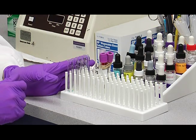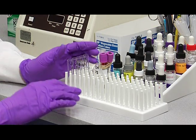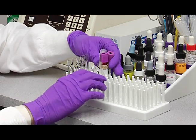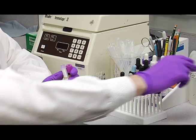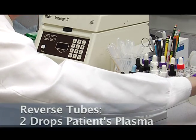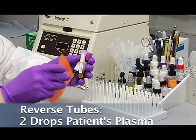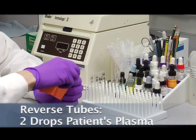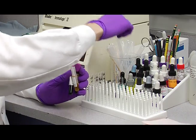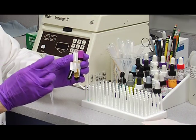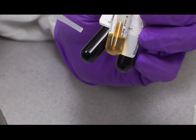After adding the commercial antisera, we'll add two drops of patient's plasma to the reverse tubes right here. Take the cap off the plasma tube. And with a transfer pipette, we're going to add two drops of patient plasma.